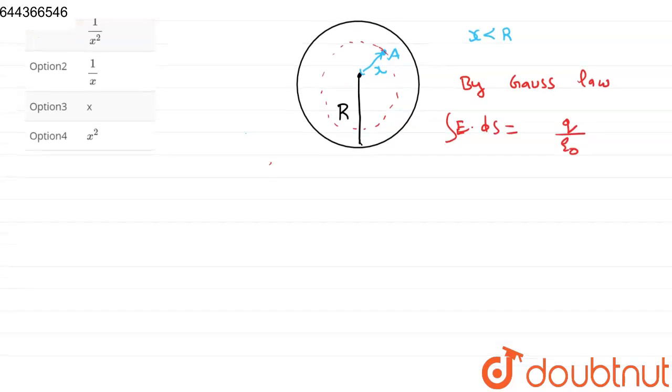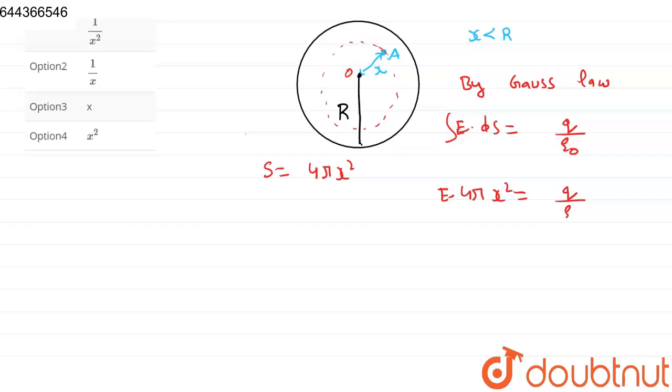Here, S equals 4π x squared because we have taken a Gaussian surface at distance x from the center O. So it will be E times 4π x squared equals q over epsilon naught.